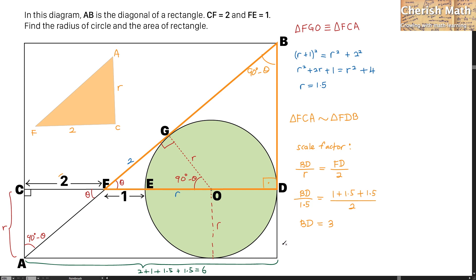For this length here it is the same as the radius this is 1.5. BD we got it earlier as 3. To find out for the area of rectangle.